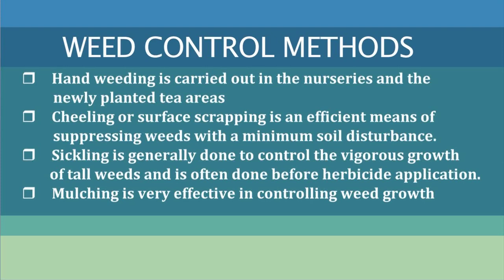Hand weeding is carried out in nurseries and newly planted tea areas where application of chemical herbicide is prohibited or hazardous for the young plants. Chilling, also called surface scraping, is an efficient means of suppressing weeds with minimum soil disturbance. It is useful in controlling shallow-rooted weeds when their density is high and a large area is to be weeded. Sickling is done to control the vigorous growth of tall weeds, and deep-rooted weeds growing around the collar of the bushes can be removed by forking.